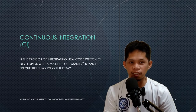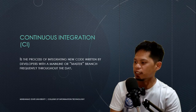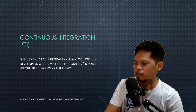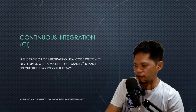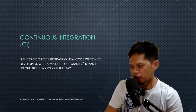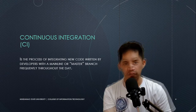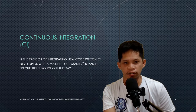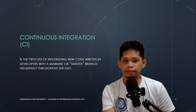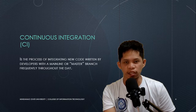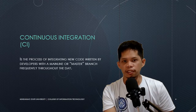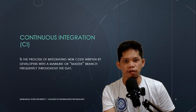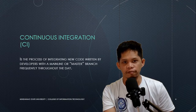One of the best practices in DevOps culture is continuous integration. Continuous integration or CI is the process of integrating new code written by developers with a mainline or master branch frequently throughout the day. Continuous integration is a process of automating system integration after coding of a developer for a specific component or task, including automated system integration testing to find out possible defects that may be caused by the new code developed by a developer.